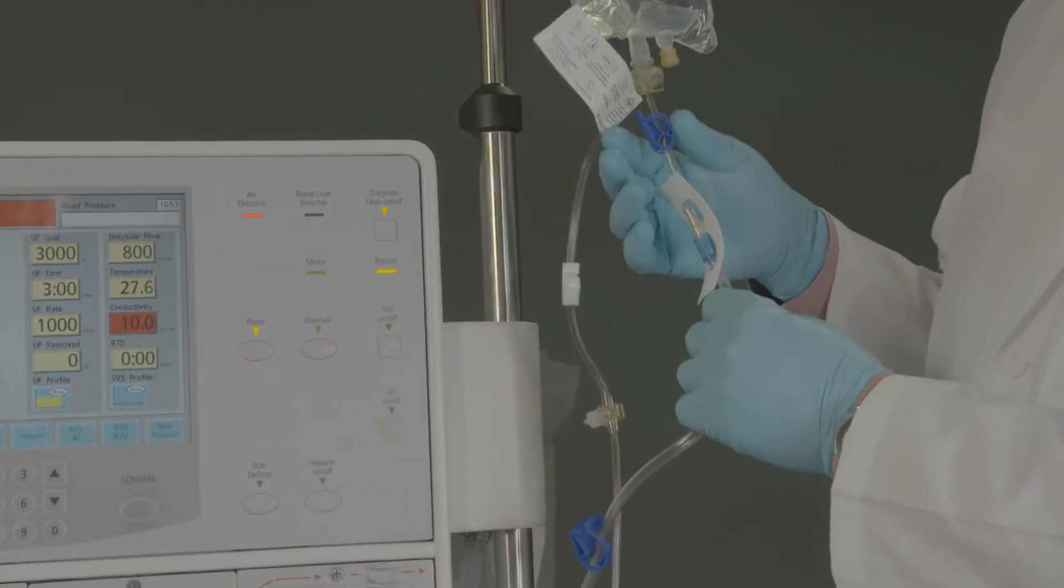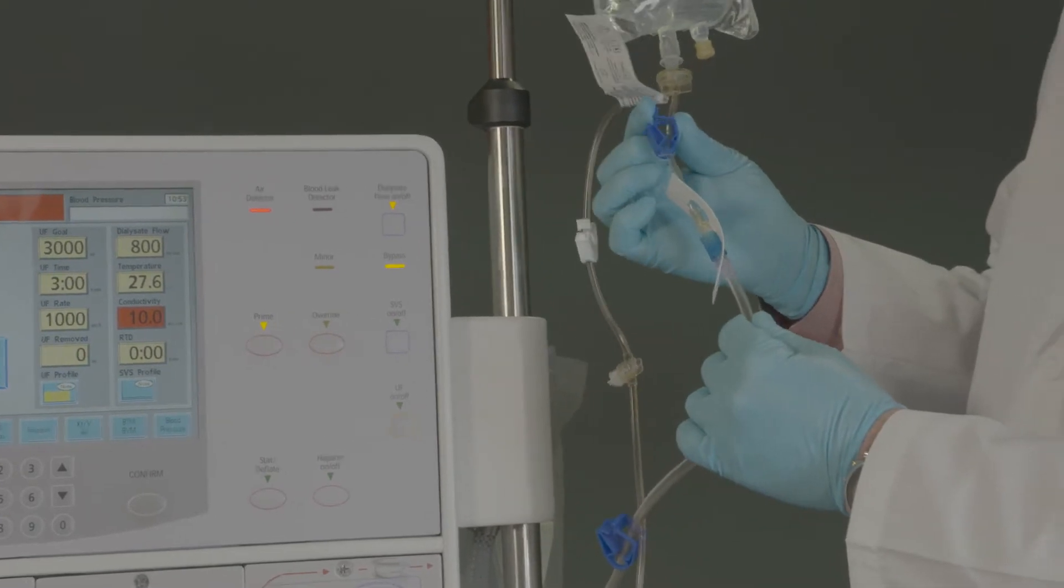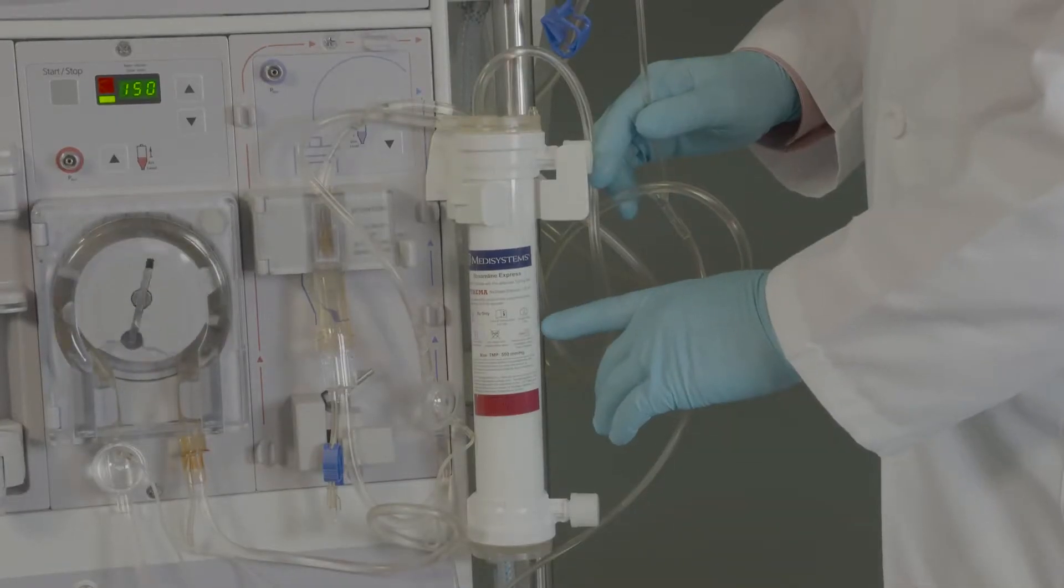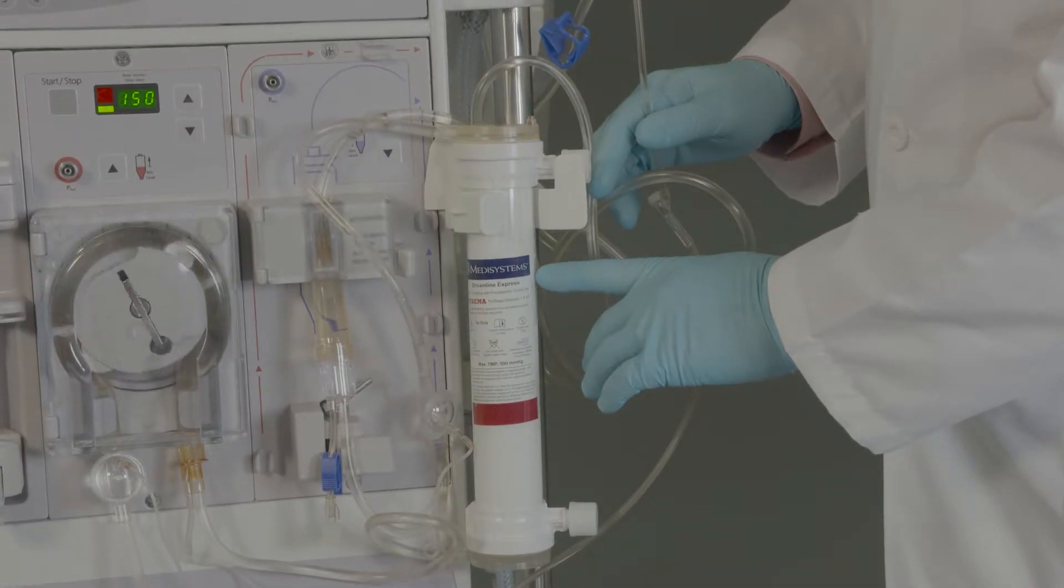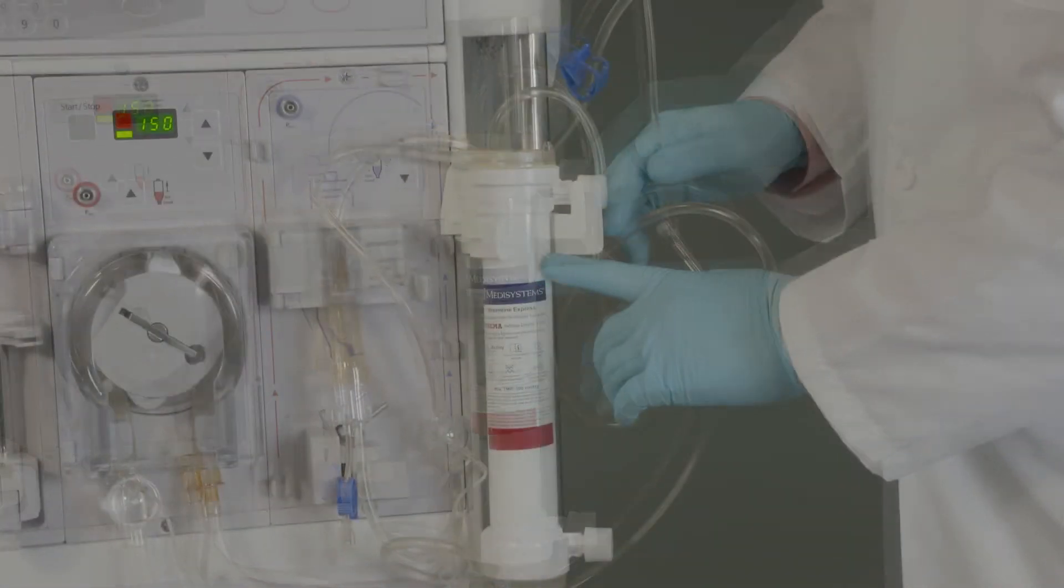Start the pump, then open the small blue clamp on the dual lumen spike. Allow the dialyzer and inverted venous chamber to fill until air is expelled. The pump will stop upon completion of prime volume.